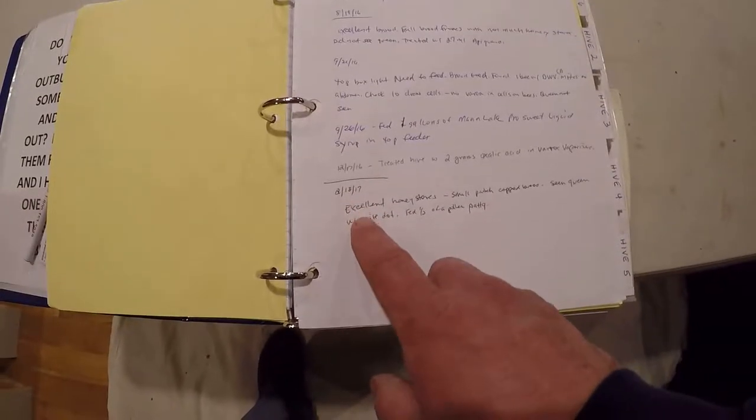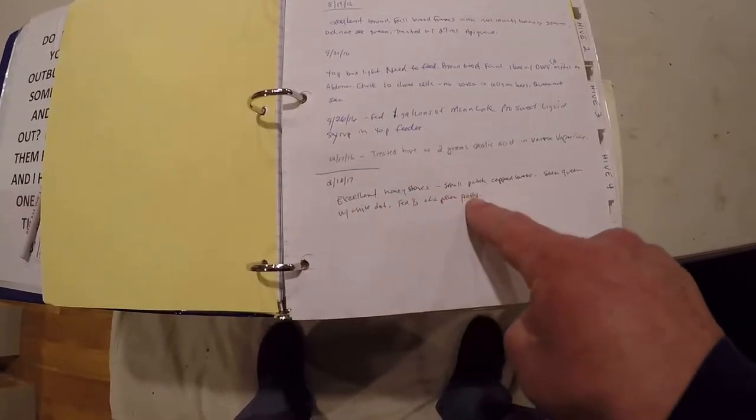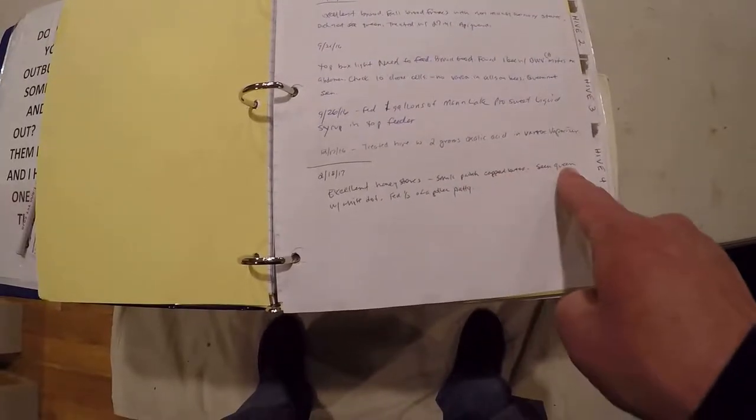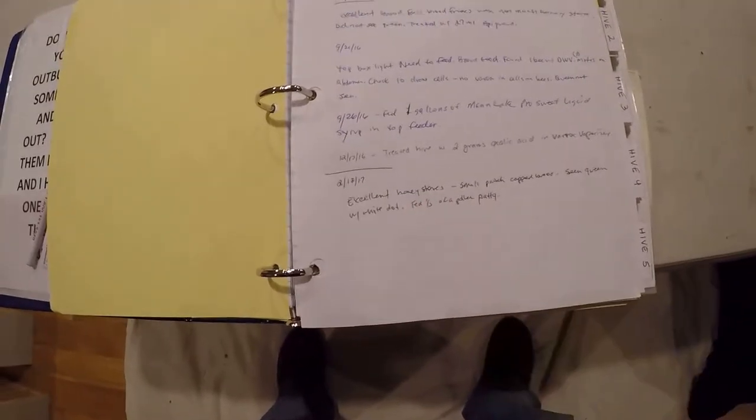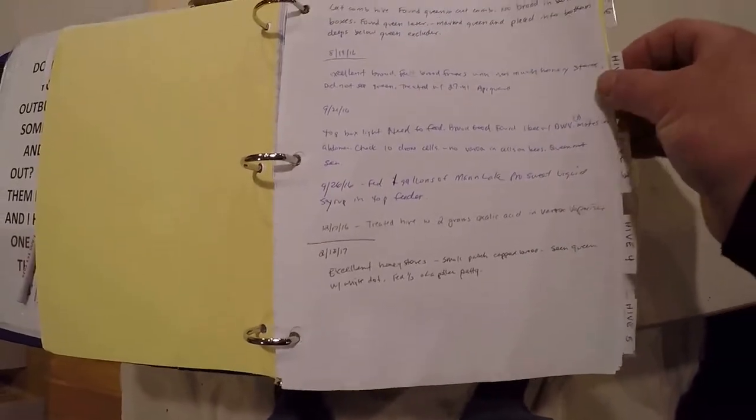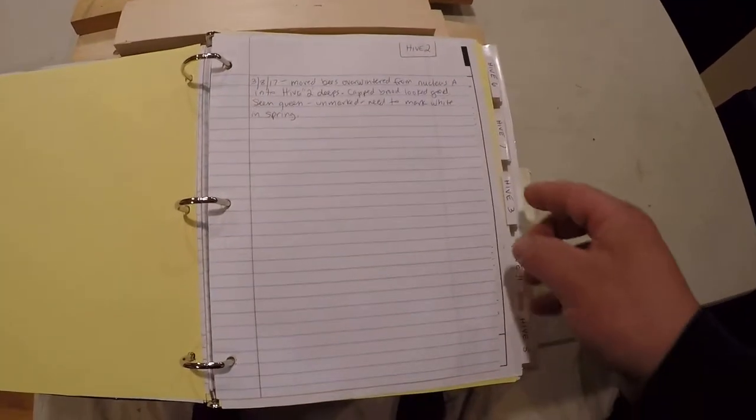February 18th, we had some good weather, excellent honey stores, a small patch of capped brood, seen the queen finally with the white dot, white marking from 2016, and I gave her about a half a piece of a pollen patty.